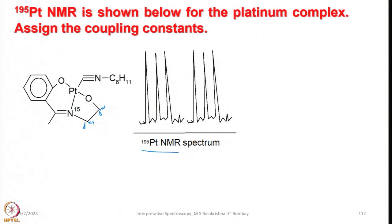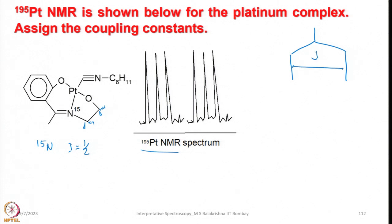Let us try to analyze. The first thing we should look into is this molecule is enriched with 15N. We know that I equals half. If it is interacting with platinum, which is one bond apart, it should split the platinum signal into a doublet. This should be the 1J(Pt-15N) coupling — this will split into a doublet.